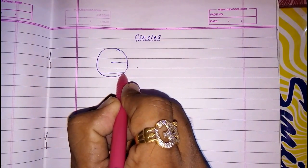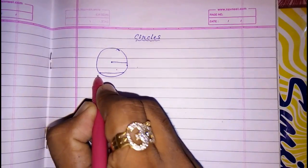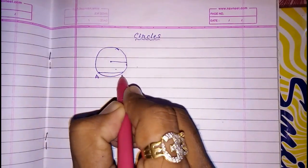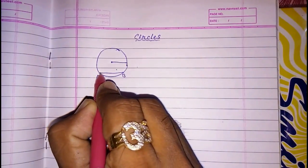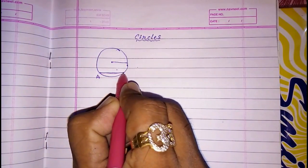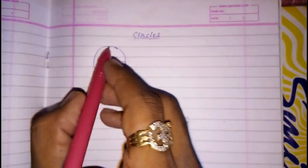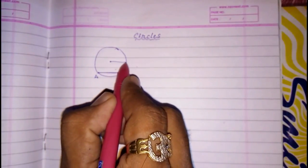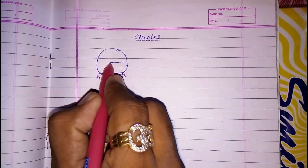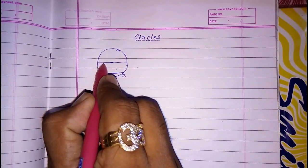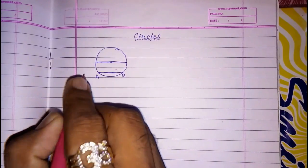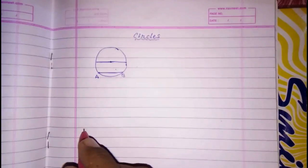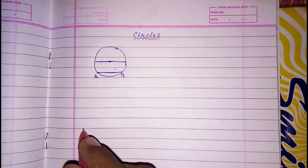Two points on the circle will make a chord. This is a chord. The longest chord is the diameter of the circle.